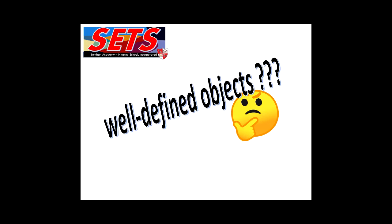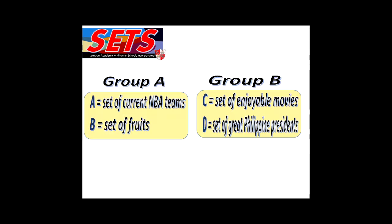I would like to emphasize the word well-defined. How do we know if an object is well-defined? Let's have these two groups of sets. Group A with set A being the set of current NBA teams, and set B as the set of roots. On the other hand, we have group B with set C as the set of enjoyable movies, and set D as the set of great Philippine presidents.